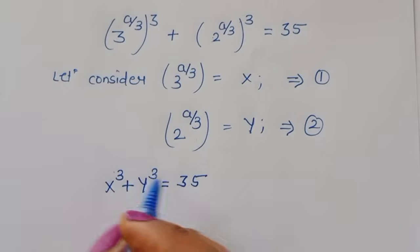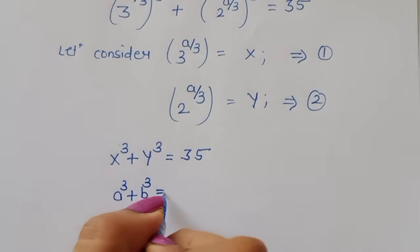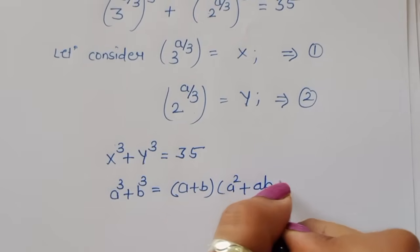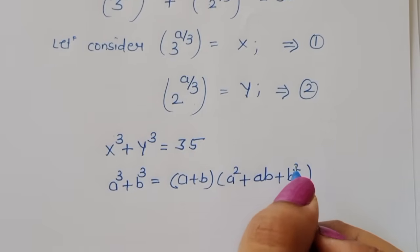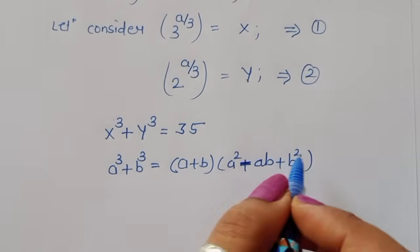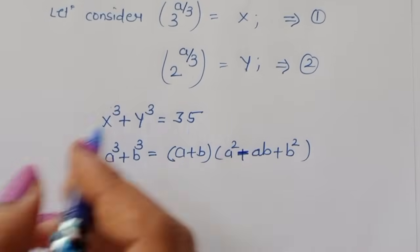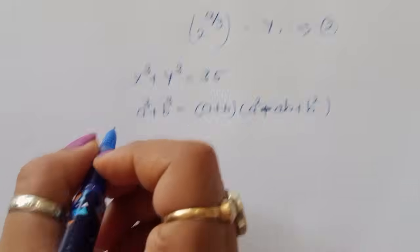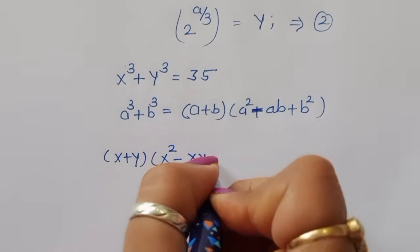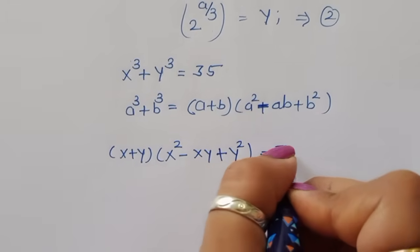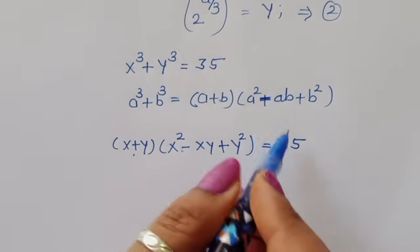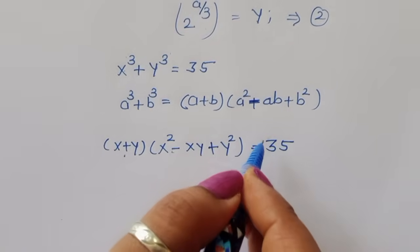Now we apply the factoring formula: a³ + b³ = (a + b)(a² - ab + b²). Using this formula, x³ + y³ = (x + y)(x² - xy + y²) = 35. Now we need to find the factors of 35.